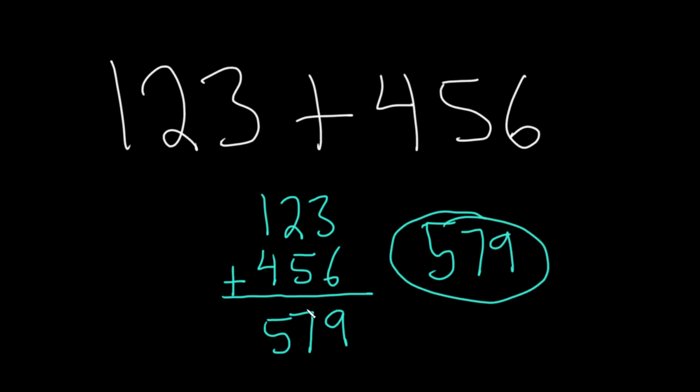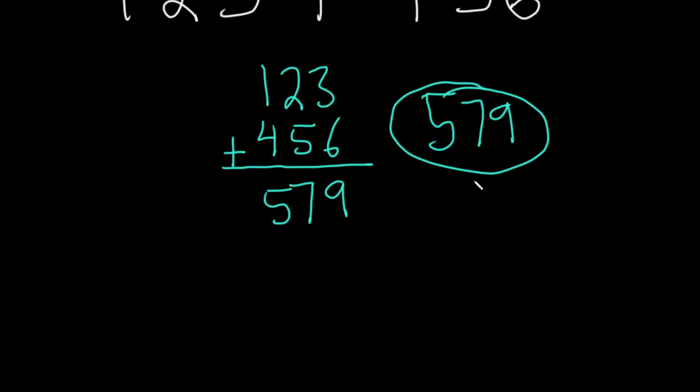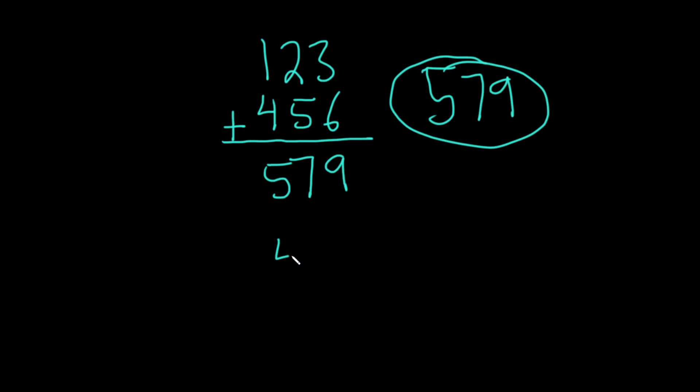So again, you write them in a column and you add. And it doesn't matter which one you write first. If I were to write, let's say instead I did 456, and then 123, and then you put the plus sign, you're going to get exactly the same answer. 6 plus 3 is 9, 5 plus 2 is 7, 4 plus 1 is 5. So in both cases, you get the answer of 579.